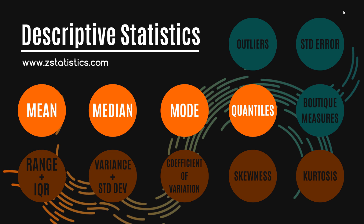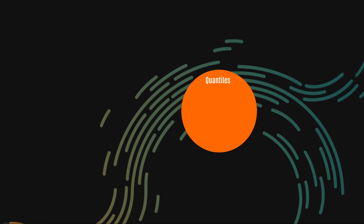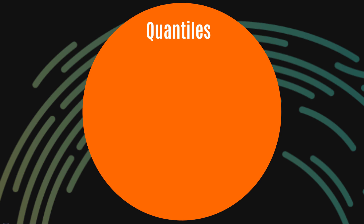In this video we're going to look at quartiles, percentiles, and deciles — which collectively we can call quantiles. They're quite straightforward in concept. This is just one video in a series on descriptive statistics, the rest of which is up on zedstatistics.com.